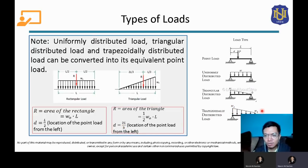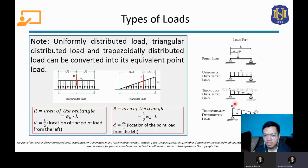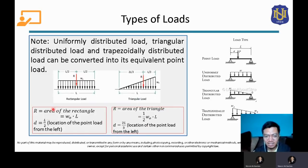For a trapezoidally distributed load, we can derive its equivalent point load by dividing the trapezoid into a rectangle and a triangle, solving each separately. Alternatively, you can divide it into two triangles. There is an established formula for the trapezoid position, but it is lengthy — so instead we will solve it using these decomposition approaches in the examples.